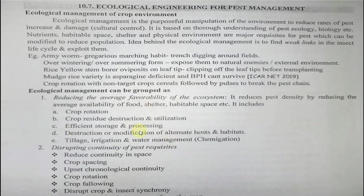Destruction or modification of the alternate host and habitats, removal of alternate hosts, clean cultivation, tillage, and proper deep summer plowing are important strategies. Irrigation management includes draining water for crops that don't require it, or flooding the field when needed. Chemigation — combining chemicals with irrigation — is another option.